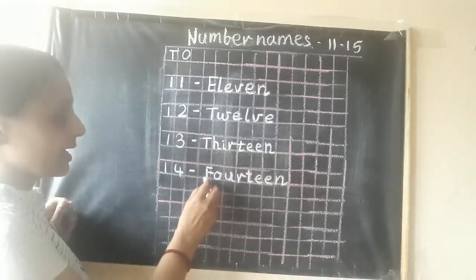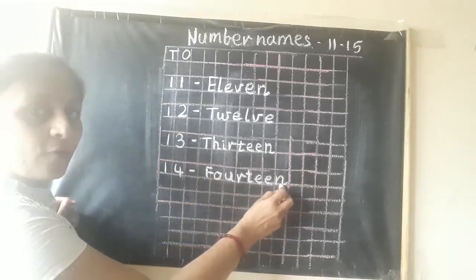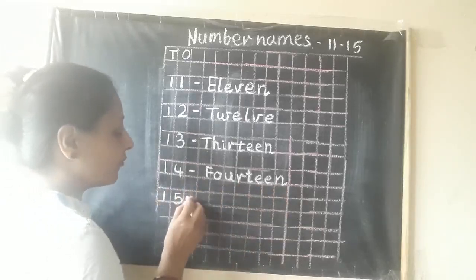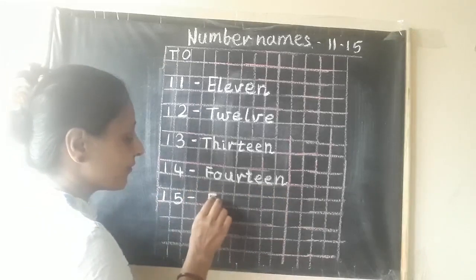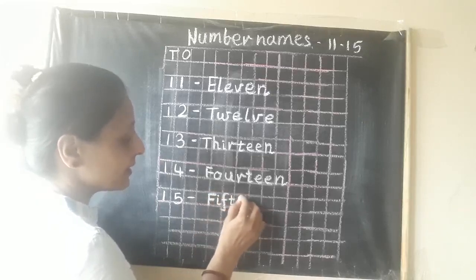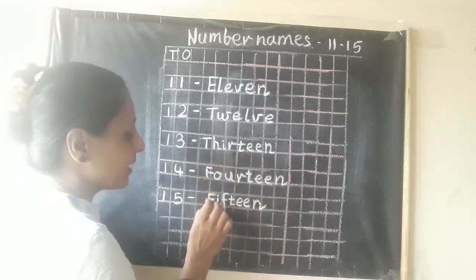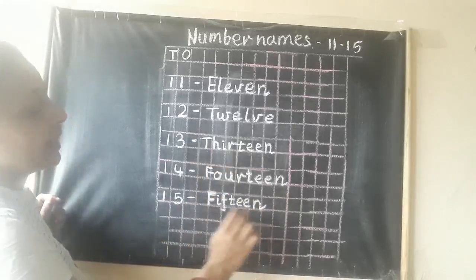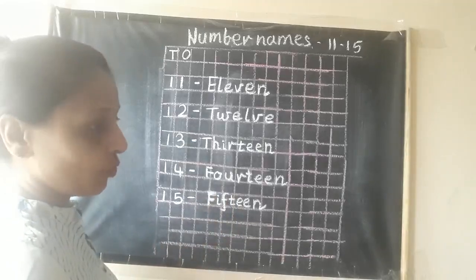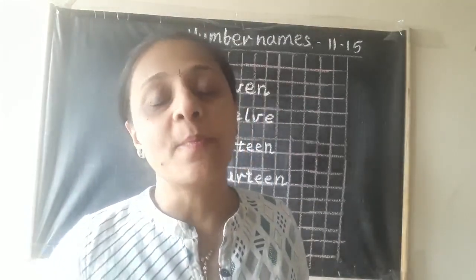Now we will write 15. The number name of 15: F-I-F-T-E-E-N. 15. Once again: F-I-F-T-E-E-N. 15. This way we are going to write number names in our notebook. I will show you how we will write these number names in the Pencil Time Mathematics Notebook.